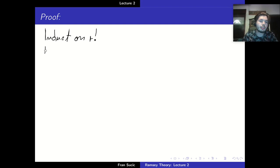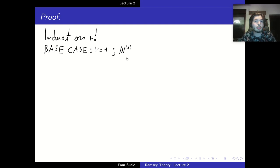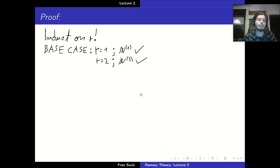First, the base case: what happens when R = 1? In that case we're just talking about the natural numbers themselves. If we color the natural numbers, can we find an infinite monochromatic subset? Of course we can — this is by the pigeonhole principle. If you want to be a bit cheeky, you can start at R = 2 and take Ramsey's theorem as proved in the previous lecture as your base case.